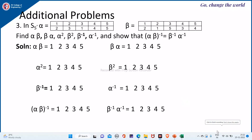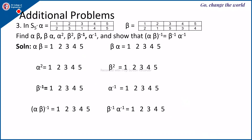We will see some additional problems. Let alpha be a permutation of 5 elements where 1 is mapped to 2, 2 is mapped to 3, 3 is mapped to 1, 4 is mapped to 4, and 5 is mapped to 5. Let beta be: 1 to 2, 2 to 1, 3 to 5, 4 to 3, and 5 to 4. Find alpha beta, beta alpha, alpha square, beta square, beta inverse, alpha inverse, and show that (alpha beta) inverse equals beta inverse times alpha inverse.